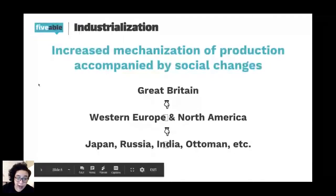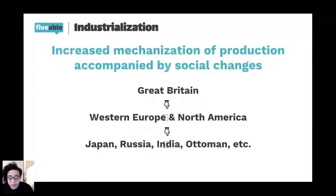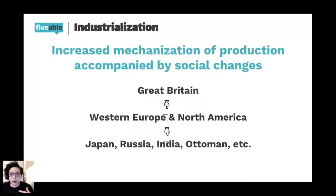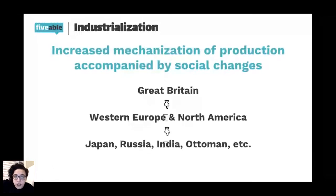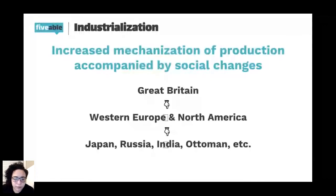Mechanization refers to using machines to drive production - instead of doing things by hand, doing things by machine so you can do it a whole lot faster. With that comes a whole bunch of social changes. Society is affected by the fact that there's more stuff. There's more food, more time, more opportunity for education. It happens first in Great Britain, then goes to Western Europe, North America, and then expands to Japan, Russia, India, and the Ottoman Empire.